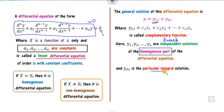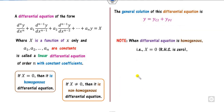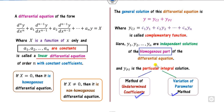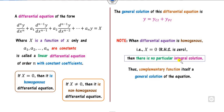There are two methods: the method of undetermined coefficients and the method of variation of parameters. Whenever X equals 0 — meaning there is no right-hand side — the particular integral yp is zero. So y is just yc; there is no particular integral, and the complementary function is itself the general solution.